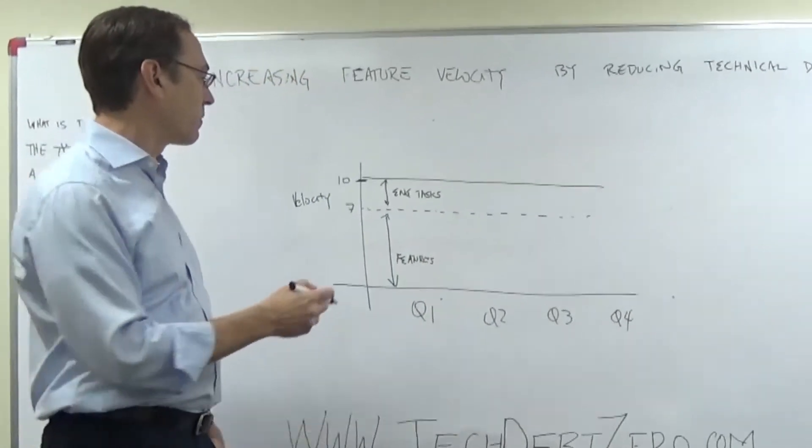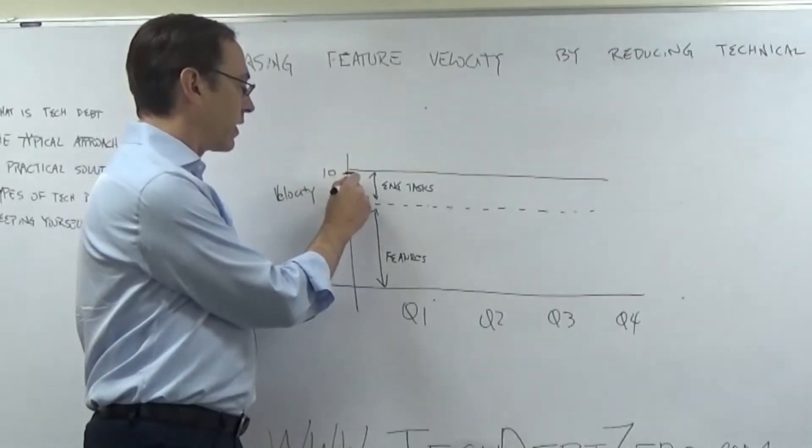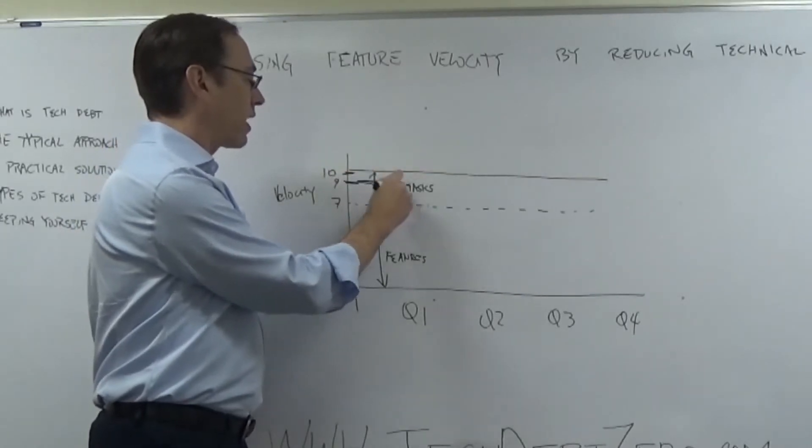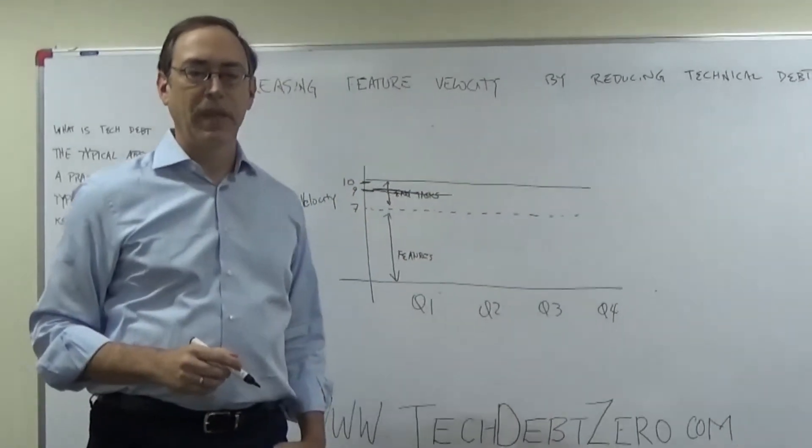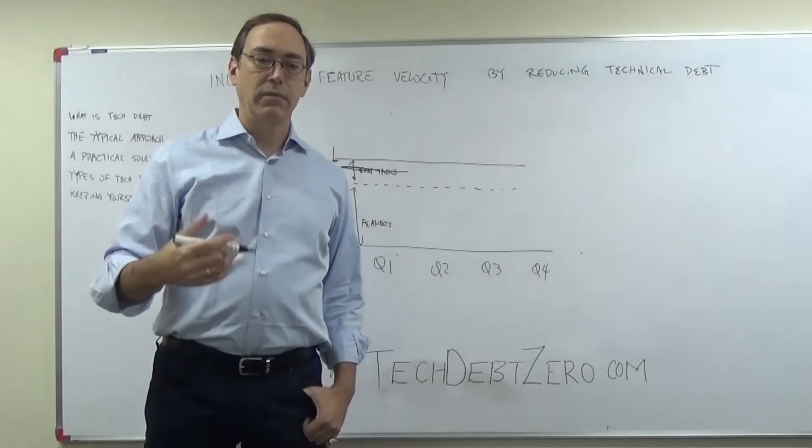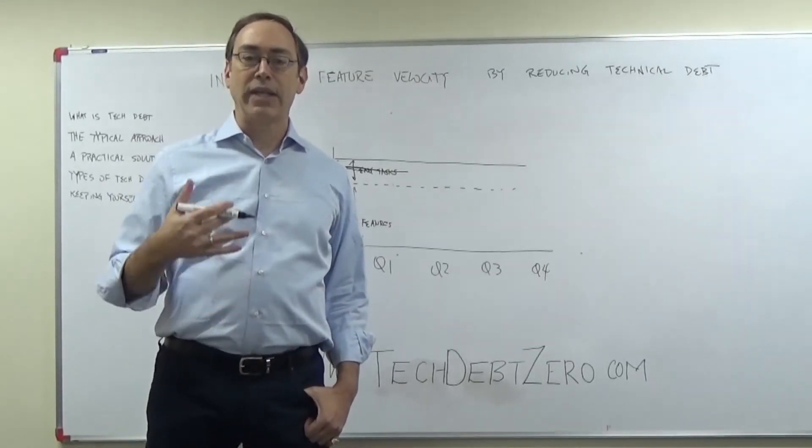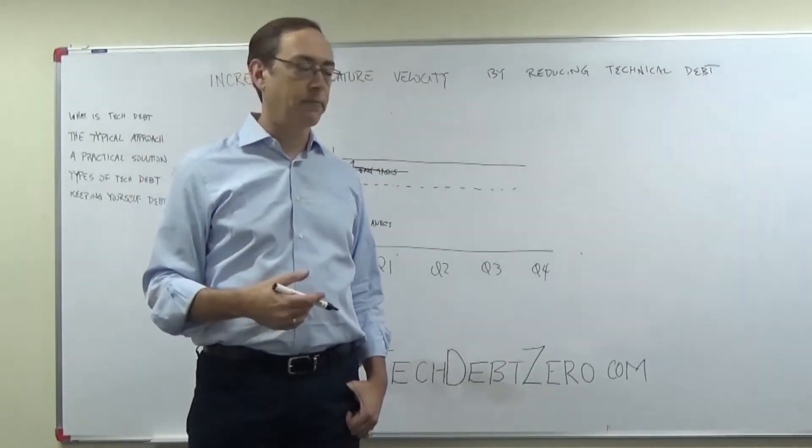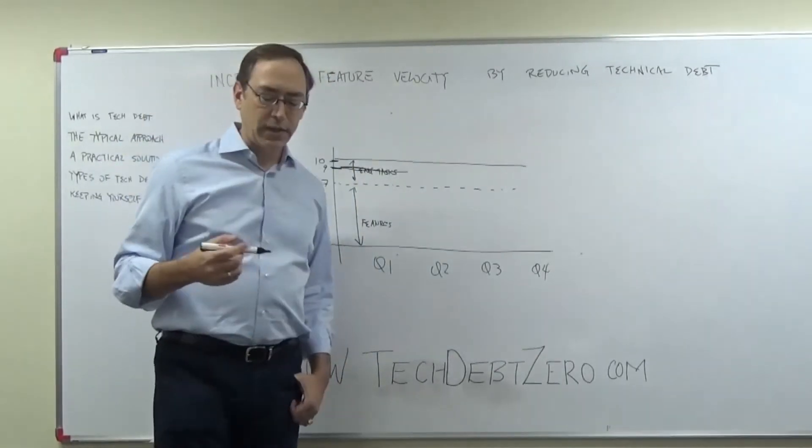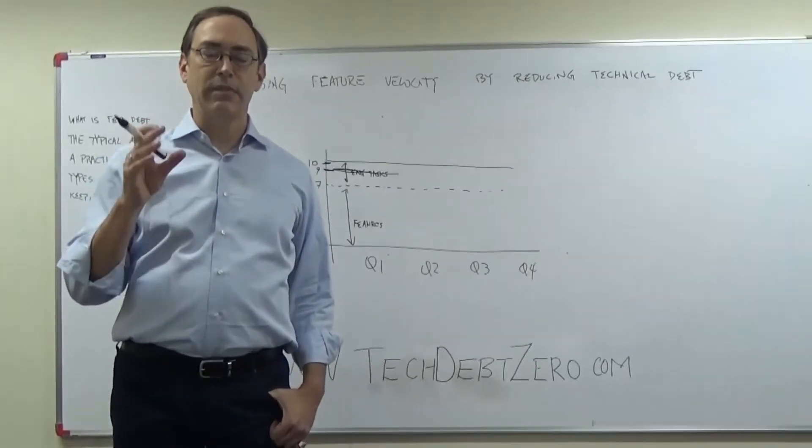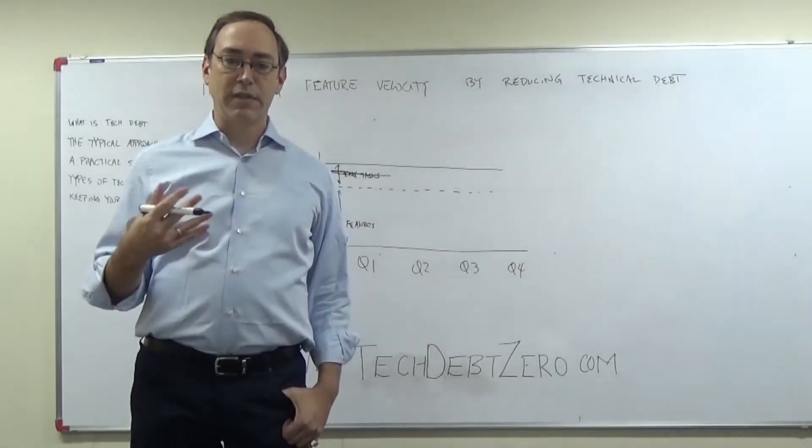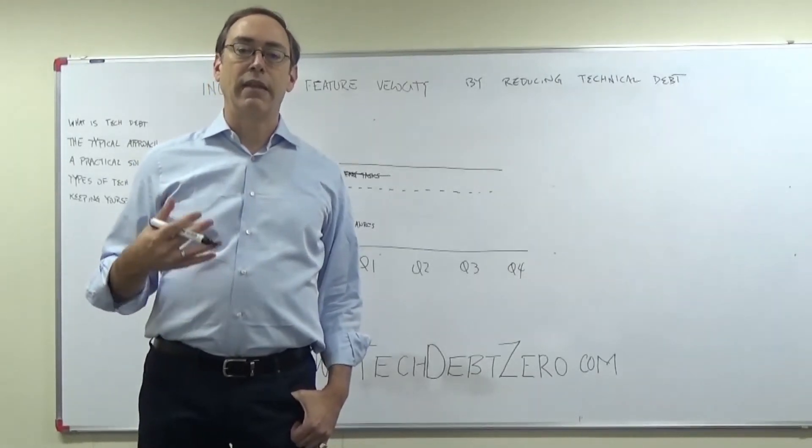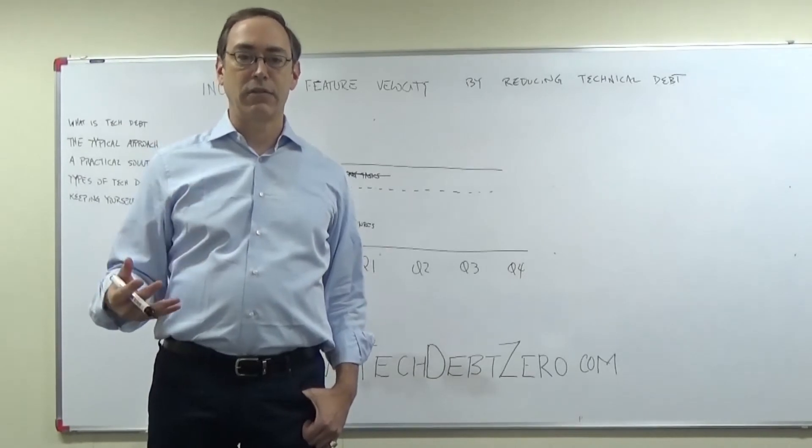Now in that situation, you might be running your feature delivery up here at, let's say, nine. And you can actually do that for some period of time. The business feels good because you're getting more features out the door and you actually have some positive reinforcement happening that it feels like you're doing the right thing. However, what's happening during that period is that the system is becoming more and more brittle and it's becoming more difficult to get work done because you've neglected some of the engineering tasks that are important. So what's happening to maintaining velocity over time?